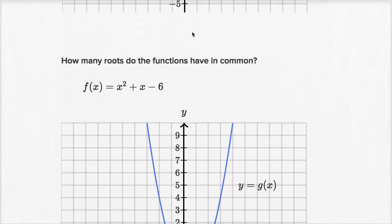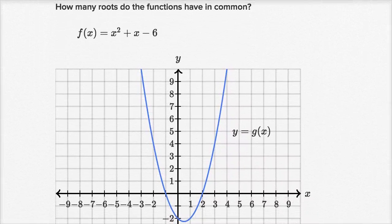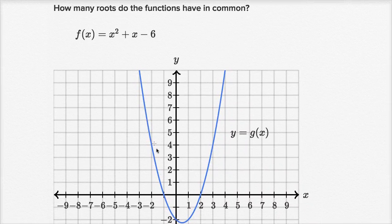Let's do a few more of these where we're comparing different functions, one of them that has a visual depiction and one where we're just given the equation. How many roots do the functions have in common? Well, g of x, we can see their roots. The roots are x equals negative one and x equals two. So these two functions at most are going to have two roots in common because g of x only has two roots.